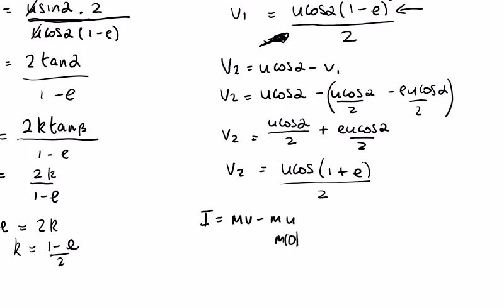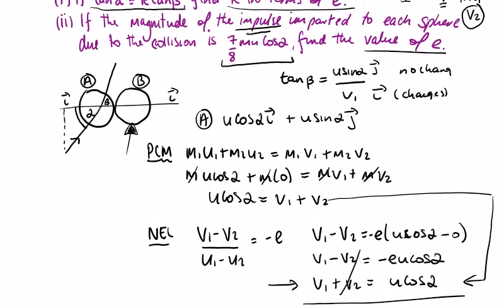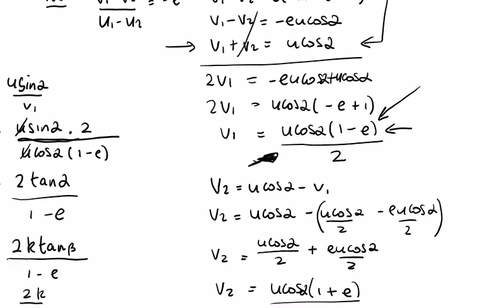So impulse equals mv minus mu. This u is zero, so we're just going to have mu cos alpha times 1 plus e over 2. And we're told that equals 7/8 mu cos alpha.